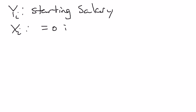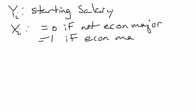I'm going to start by defining some variables. Let's say yi is starting salary. Since I'm using the i subscript, that should be a big hint that this is cross-sectional data. And xi is a variable that equals 0 if not econ major and equals 1 if econ major. So this variable represents the quality of being an economics major.